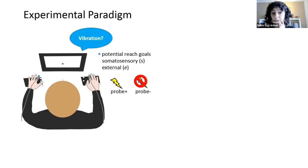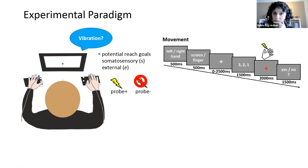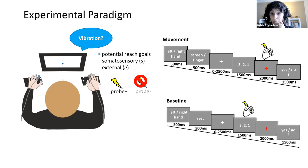At the end of the reach, we asked them whether they detected anything and they answered either yes or no. So this is how movement trials look like. We also presented baseline trials in which they received same stimuli, but this time without moving their hands. So in this case, we shouldn't be seeing any suppression.